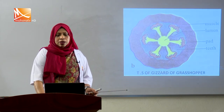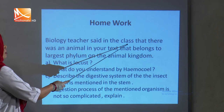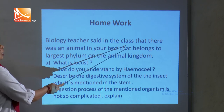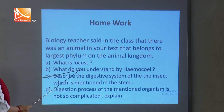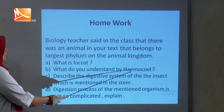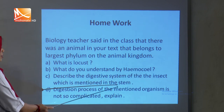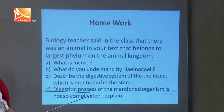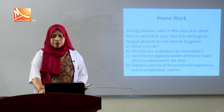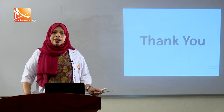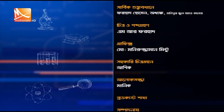That is all, dear students. Here is a homework from your biology teacher: the stem mentions an animal belonging to the largest phylum in the animal kingdom. Questions are: a) What is Locust? b) What do you understand by haemocoel? c) Describe the digestive system of the insect mentioned. d) Explain that the digestion process of the mentioned organism is not so complicated. Thank you, dear students — see you soon. Take care.